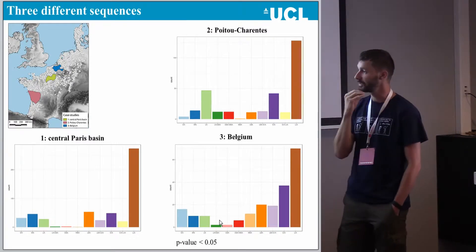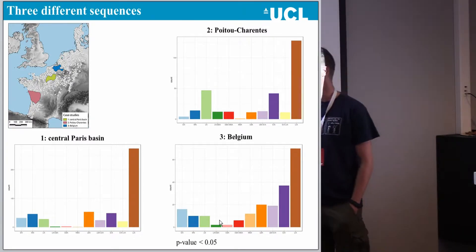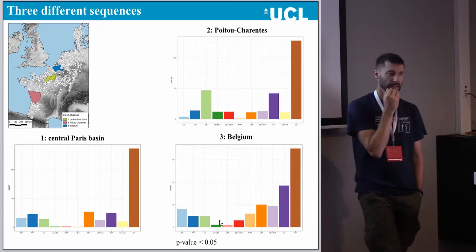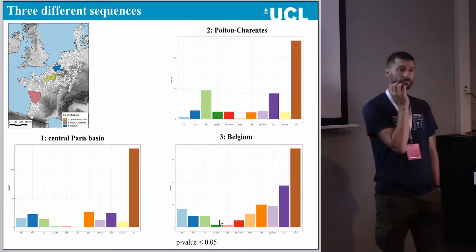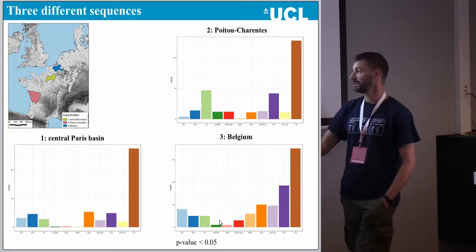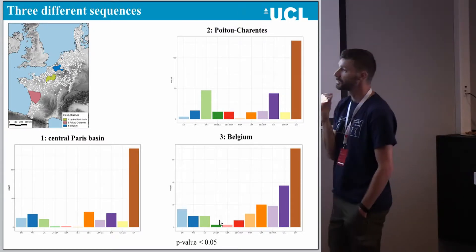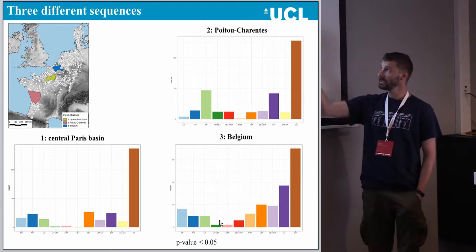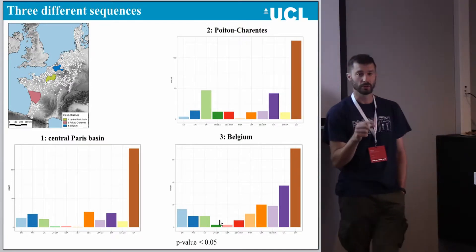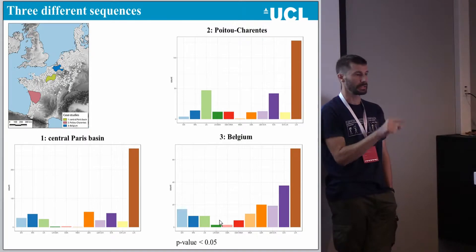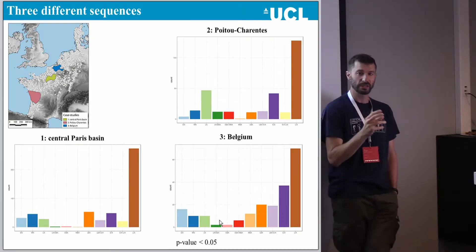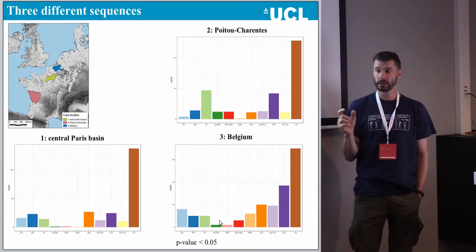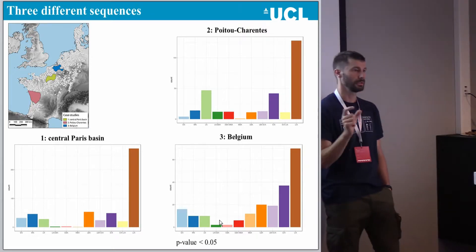What you have here are simple bar charts where I've grouped the data into broad chronological categories — early, middle, and late Neolithic, Bronze Age, early Bronze Age, and so on — visualizing the number of sites per period. In all cases there is an explosion in the late Iron Age, which is no surprise. But when you compare the three distributions using chi-square, every single one is different from the others. So we have three distinct historical sequences specific to each region. The question is whether those different histories are translated in terms of lowlands.